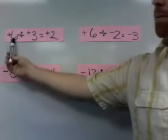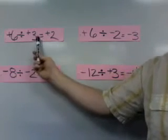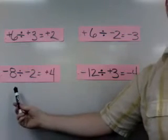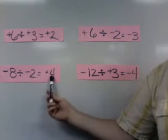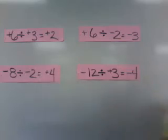Look at this. Positive 6, positive 3, positive 2. Negative 8, negative 2, positive 4. What's going on here?